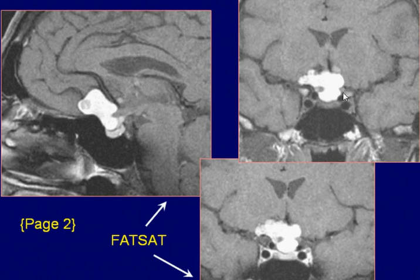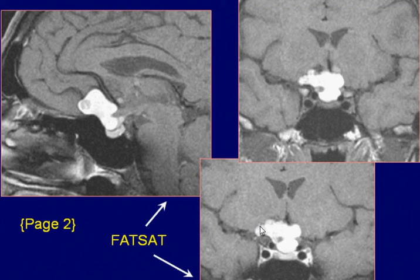Coronal pre- and post-contrast fat saturation T1-weighted images show the lesion as a hyperintense area in the supra-sellar region with extension to the adjacent cistern and posterior fossa. The right optic nerve is indenting the right side of the lesion.